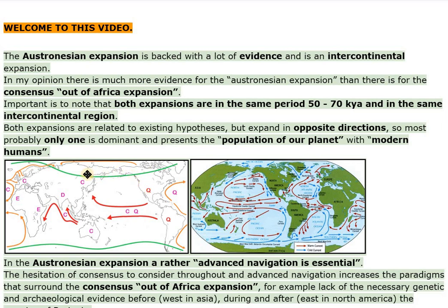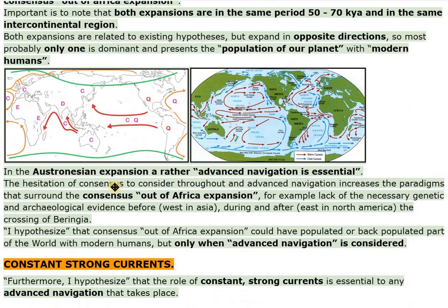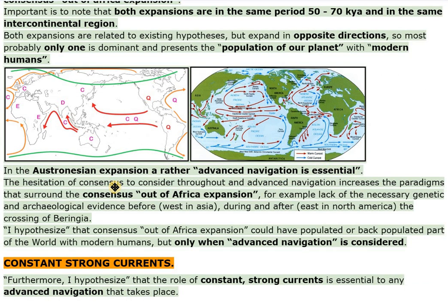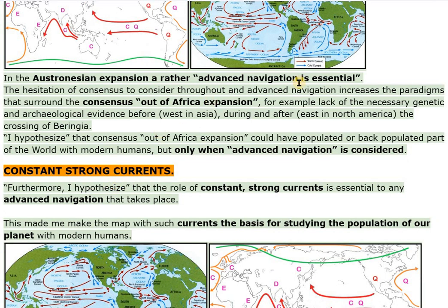There is a lack of genetic and archaeological evidence before, west in Asia, during, and after, east in North America, the crossing of Beringia. I hypothesize that the Consensus Out of Africa expansion could have populated or back-populated part of the world with modern humans, but only when advanced navigation is considered.